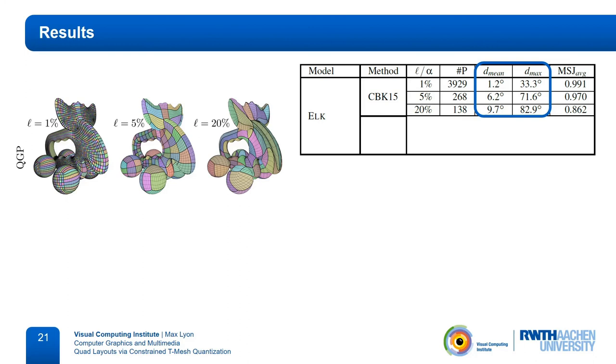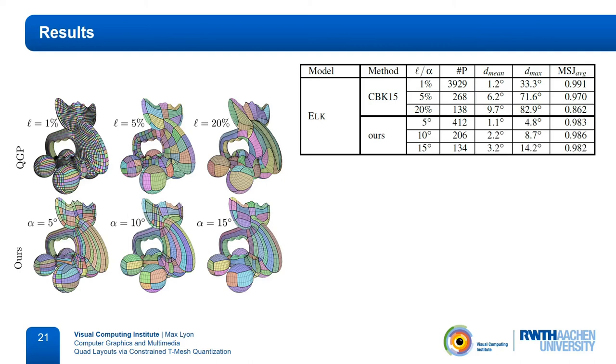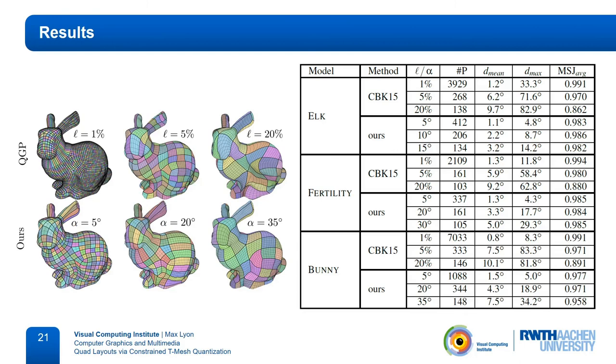For comparison, we generated quad meshes with our technique with varying angular bounds alpha ranging from 5 degrees to 45 degrees and present the results with the most similar number of layout patches. Even our densest layout with angular bound of 5 degrees is a lot coarser, while also having a lower average and maximum separatrix deviation. The two coarser versions have a similar number of layout patches, but also a smaller separatrix deviation. The quality of the individual elements, as indicated by the average minimum scale Jacobian, is a bit better with QGP for the densest layout. But this comes at the cost of almost 10 times as many layout patches. In the other versions, our element quality is higher. The same general behavior can be observed on the fertility model, as well as on the bunny.